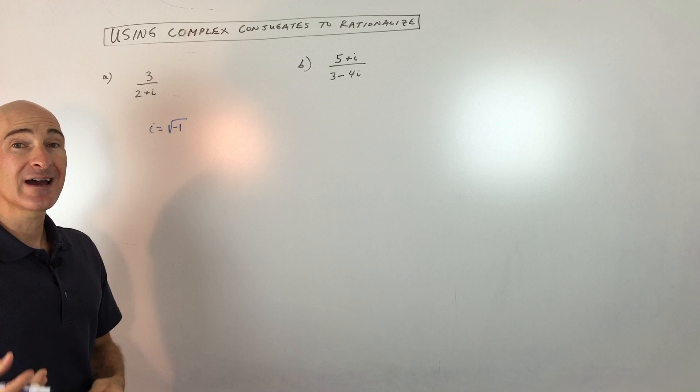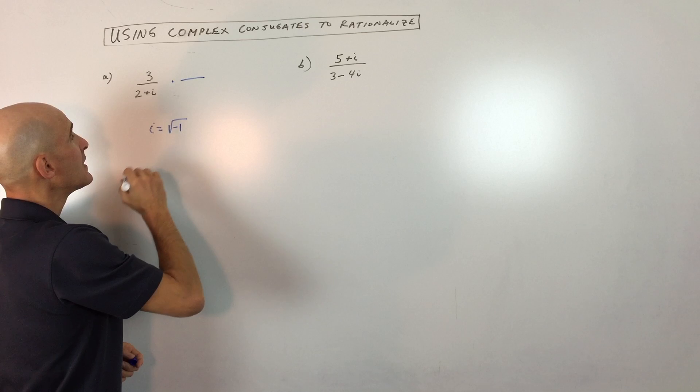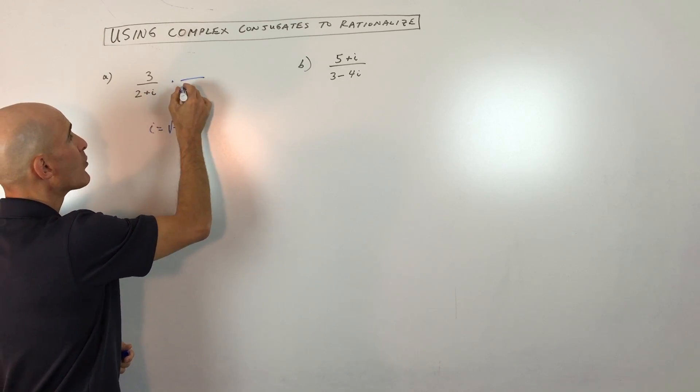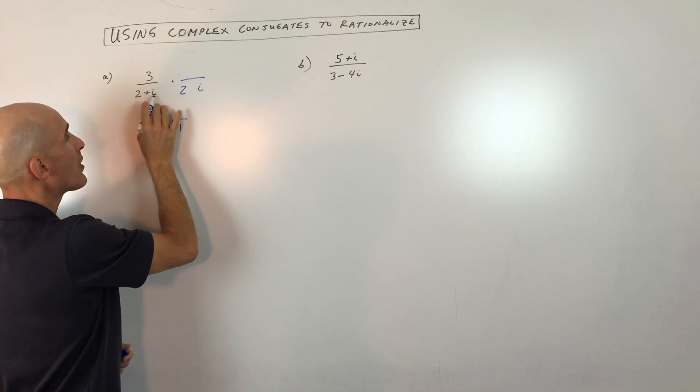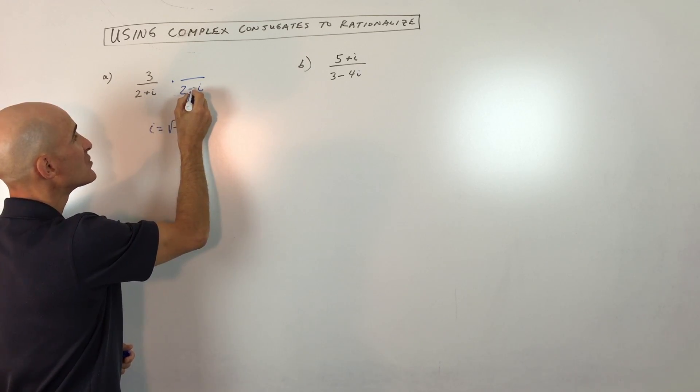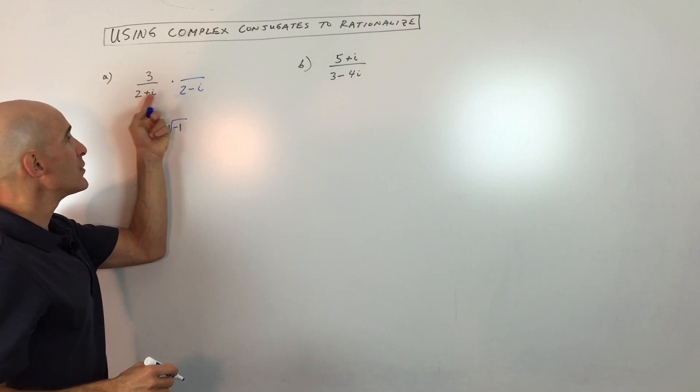What we do is we multiply by the complex conjugate. Now the complex conjugate is two plus i, but what we're going to do is we're going to change that sign in between the two and the i, the real part and the imaginary part. We're going to change that to the opposite. So if this was minus, this would be plus, and vice versa.